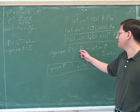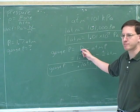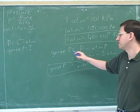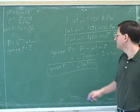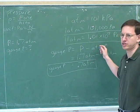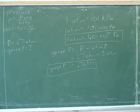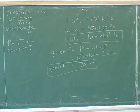If we just use the symbol P, we mean the actual total absolute pressure. But if we say gauge pressure, that's the difference between the actual pressure and the atmospheric pressure subtracted out. It's important to be comfortable with both those concepts.